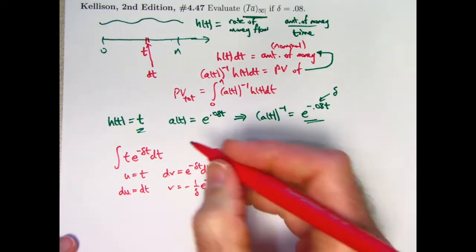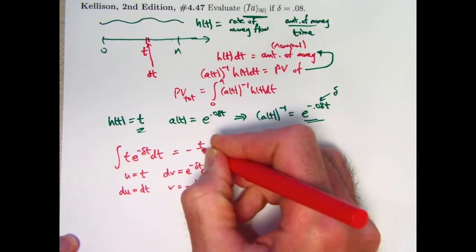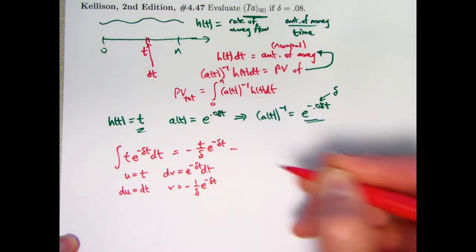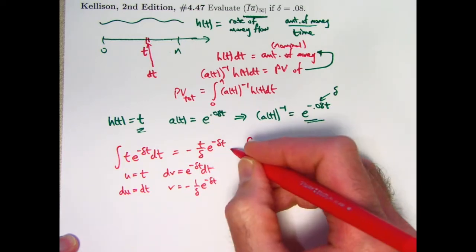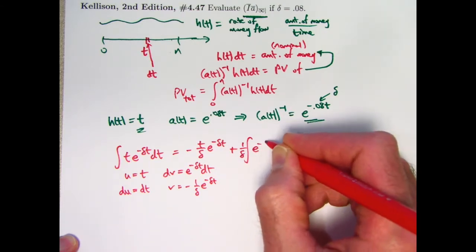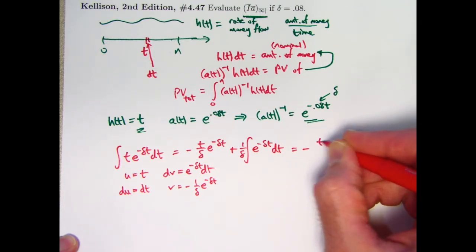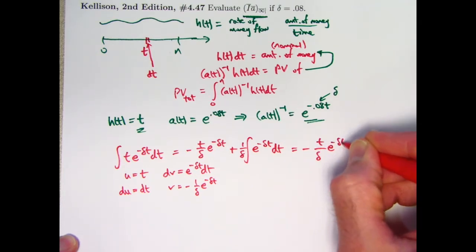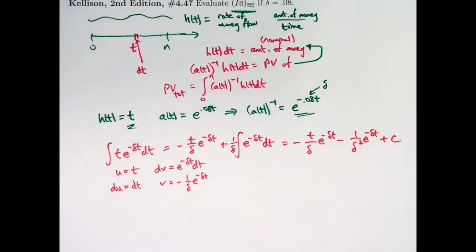Okay. So we're going to go ahead and find the antiderivative here. u times v is going to be negative t over delta e to the negative delta t, minus the integral of v times du. The negative 1 over delta can come out front as a positive 1 over delta. It can cancel with the negative sign that was there. And get an e to the negative delta t dt here. And now we can integrate this second integral to get our final answer for our antiderivative. Like that. Okay. And we can go ahead and use this to finish the problem.